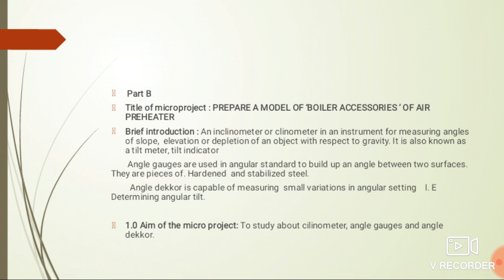An inclinometer is an instrument for measuring angles of slope, elevation and depletion of an object with respect to gravity. It is also known as a tilt meter or tilt indicator.